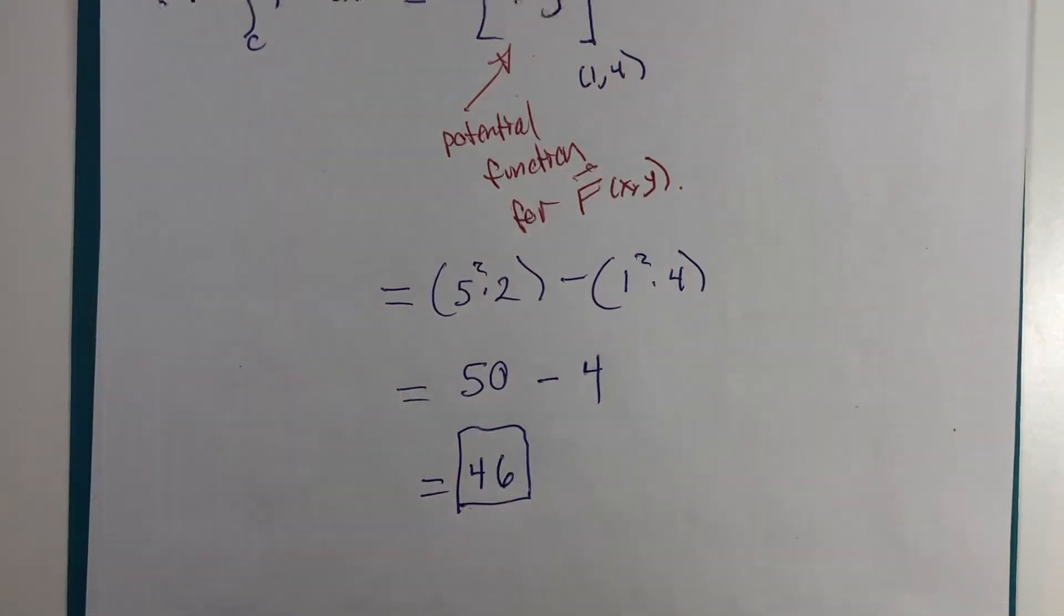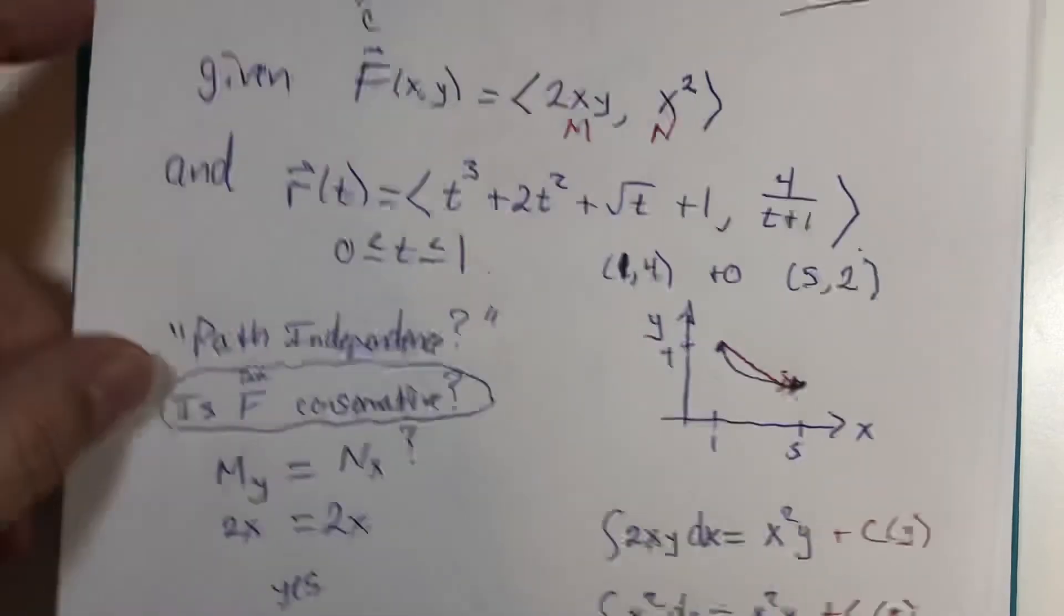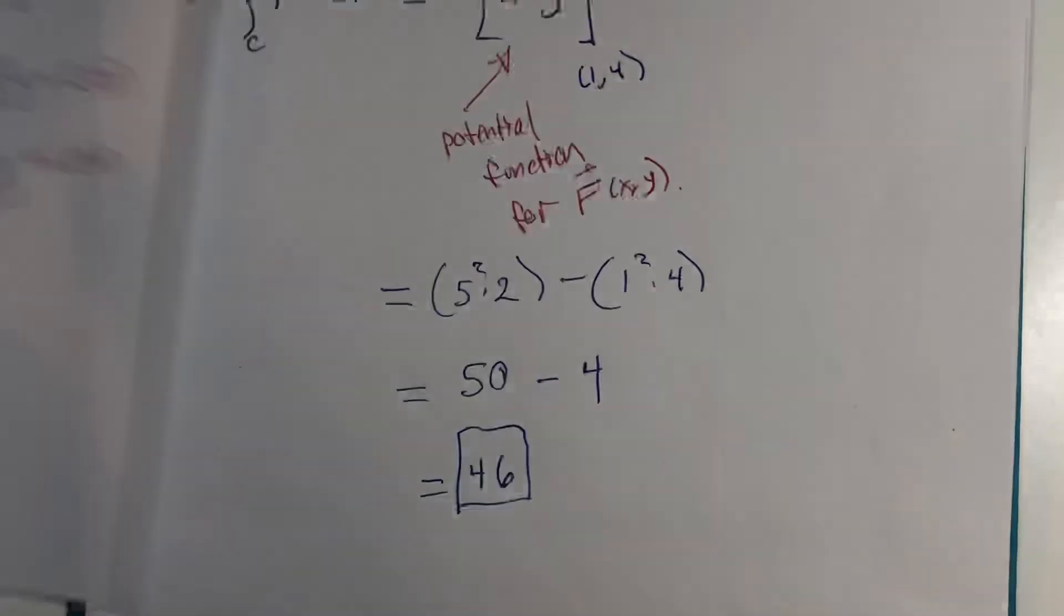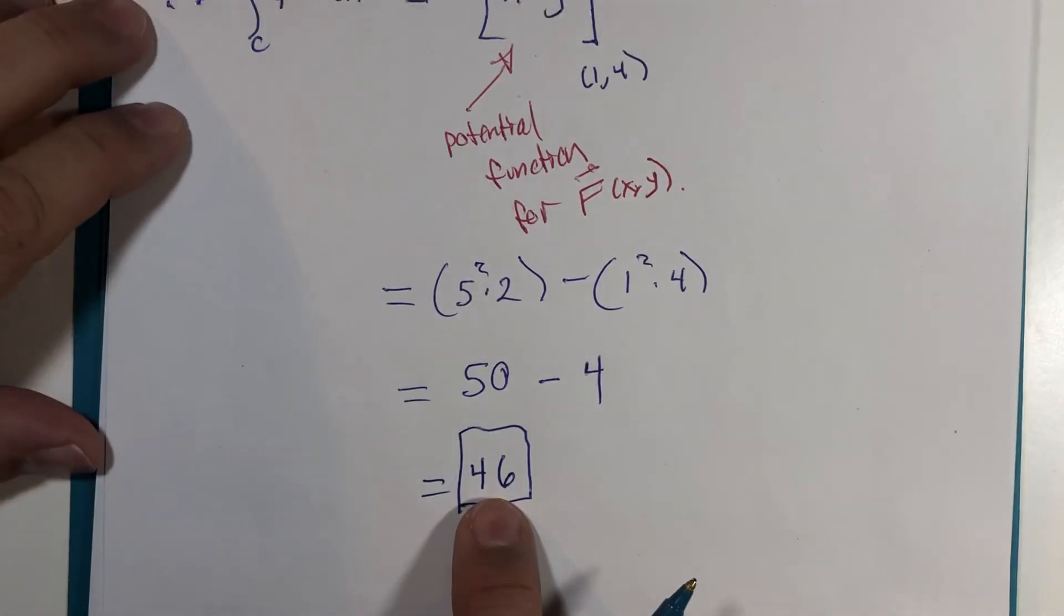If we had attempted to evaluate on this original curve, we should get the same value of 46. But man, I do not want to have to evaluate the other function. So, I'm not. That's the blessing of the Fundamental Theorem.